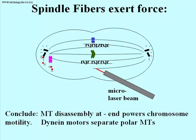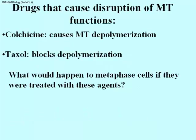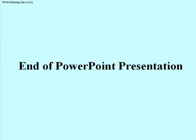Dynein motors separate the polar microtubules at the same time as microtubule disassembly occurs at the minus end. There are several drugs that can disrupt microtubule functions. Colchicine causes microtubules to depolymerize — the microtubules will dissolve and disappear. Taxol, isolated from the bark of a particular tree, blocks depolymerization — it blocks the disassembly of microtubules. Ask yourself: what would happen to dividing cells that have reached metaphase if they were then exposed either to colchicine or to taxol?